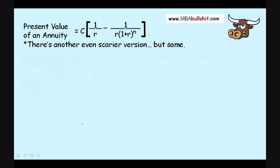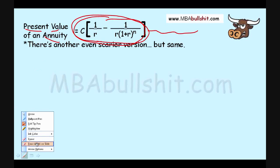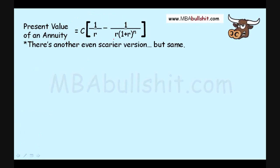Now, there's actually an even scarier version than this. Your professor might use a different formula than this but it's still the same as this. As long as he says it's the present value of an annuity formula, it's actually the same as this but it might be even longer or crazier but mathematically, it will be the same.